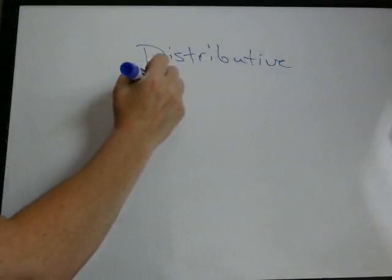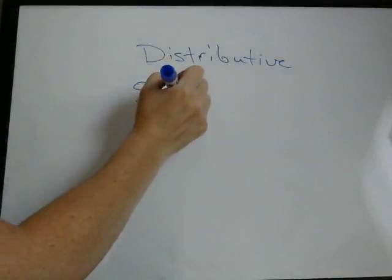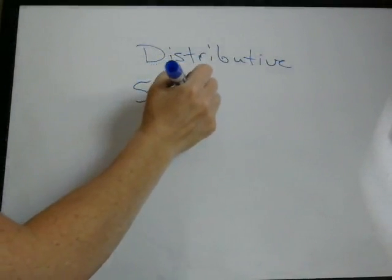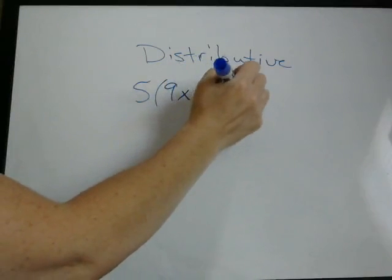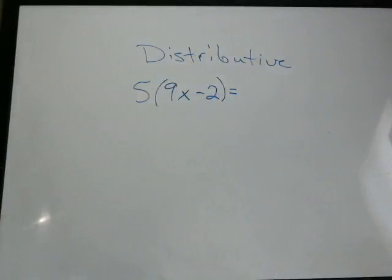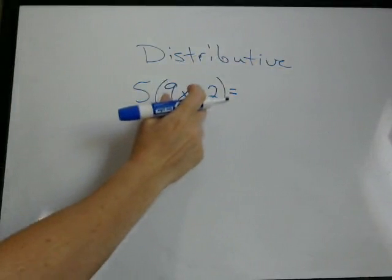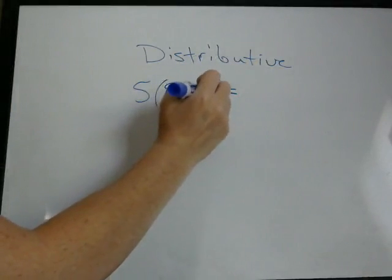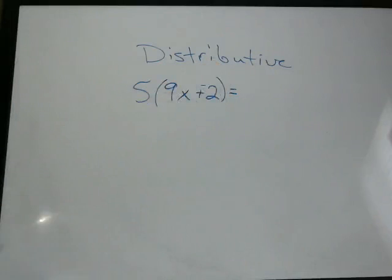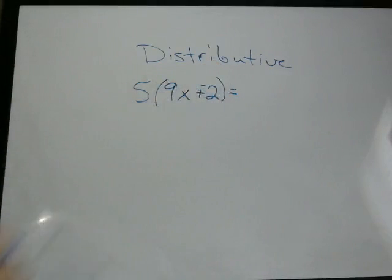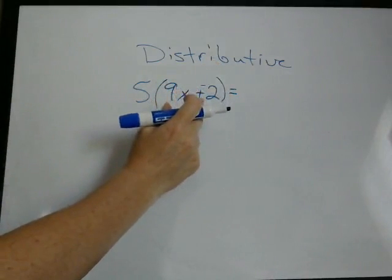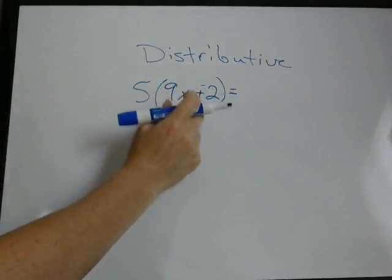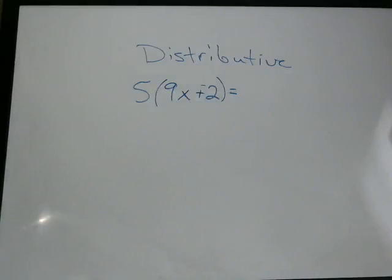I'll do another one. 5 times 9x minus 2. Now here it depends on how you think about things. You can either think of this as minus 2, or you can think of it as plus negative 2, if you're used to thinking in addition. So it was originally a minus 2. Now we're going to say plus negative 2. And do the same thing.